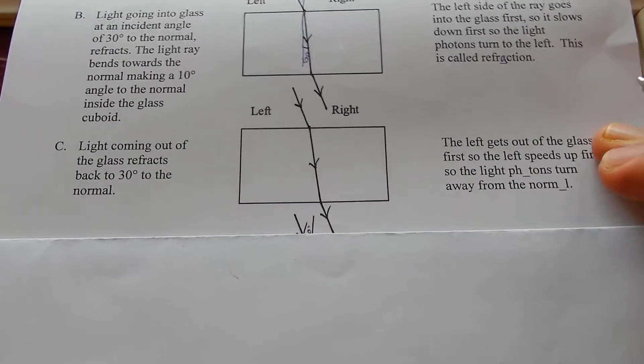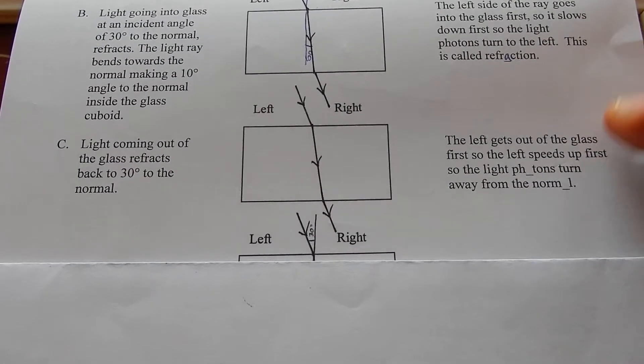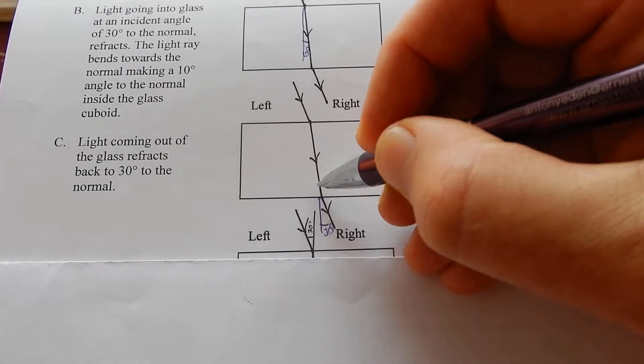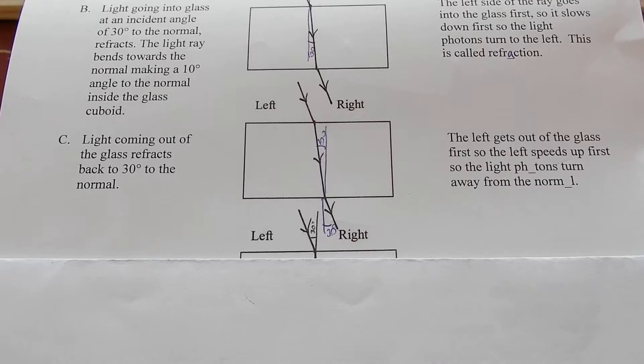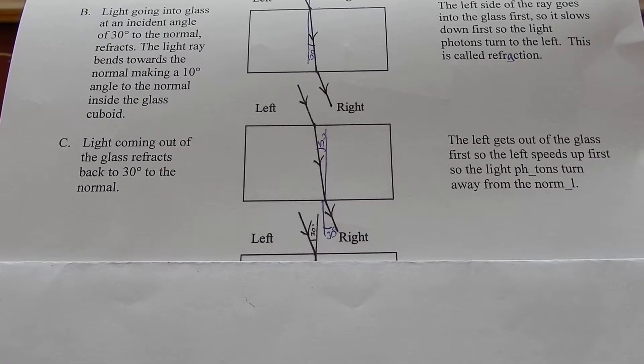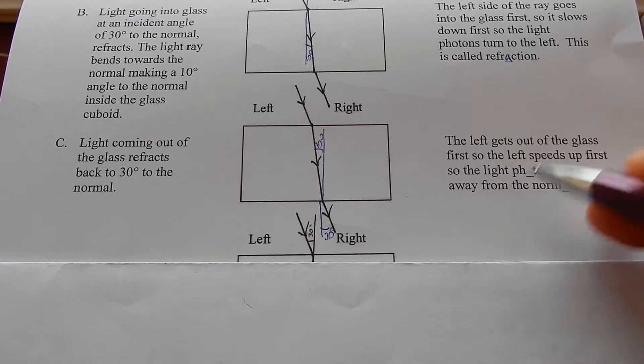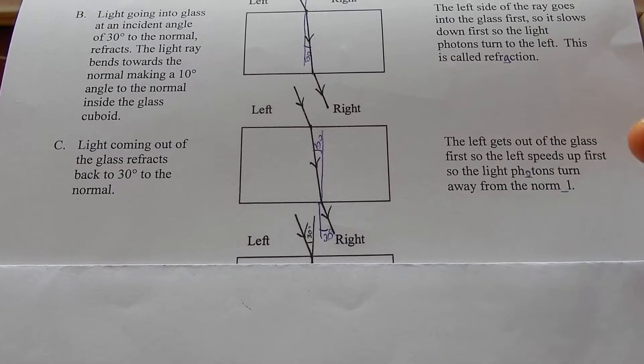Light coming out of the glass refracts back to 30 degrees. The left gets out of the glass first. So the left light speeds up first. So the light photons turn away from the normal.